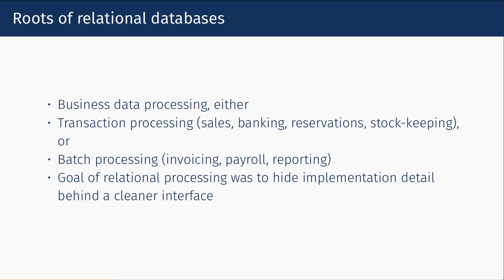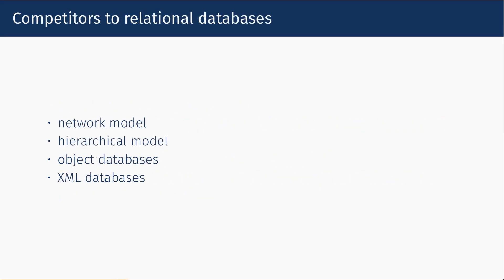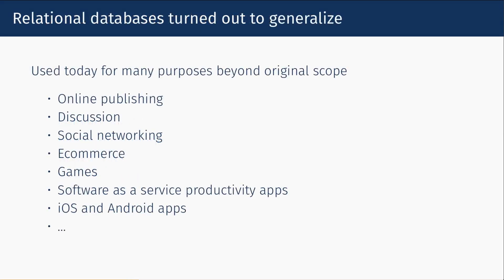The roots of relational databases are in business data processing — transaction processing or batch processing. The goal of relational processing was to create an abstraction to hide implementation detail behind a cleaner interface. In the 1970s, there were several competitors to relational databases, mainly the network model and the hierarchical model. In the 1980s and 90s, object databases competed, and in the early 2000s, XML databases competed. But relational databases turned out to generalize very well, so they're used today for many purposes beyond their original scope.